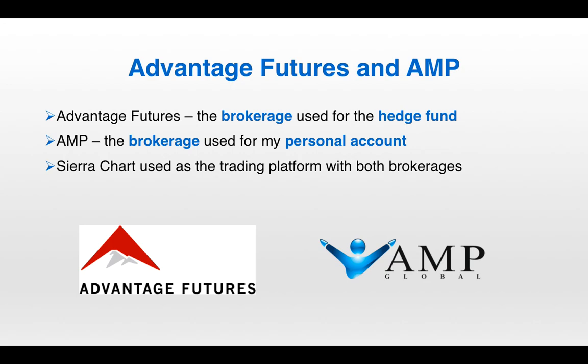And finally, two more brokerages: Advantage Futures and AMP — with Advantage Futures being the brokerage we use for the hedge fund and AMP being the brokerage I use for my personal account. With both of these brokerages, Sierra Chart is the trading platform we'll be using. That'll do it for this presentation on the technology we use to trade, which also finishes all the content in this Quant Trading in Futures video series. Next time we'll have a recap highlighting the most important points from each video.